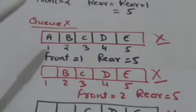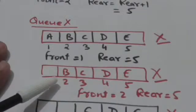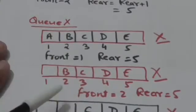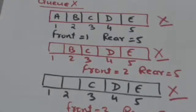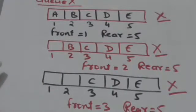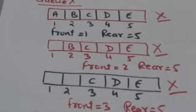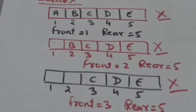Suppose we have to delete A from queue X. The value of variable front will become 2 when we delete element A. Now after deletion of A, B is the front element of queue X. Suppose we have deleted element B also — since B is the front element, the value of variable front will become 3, and now element C is the front element of queue X.